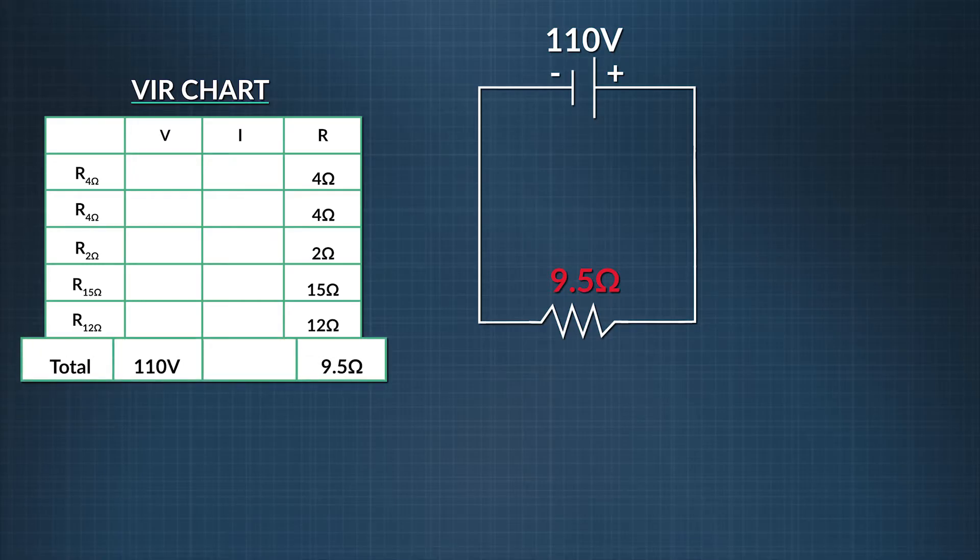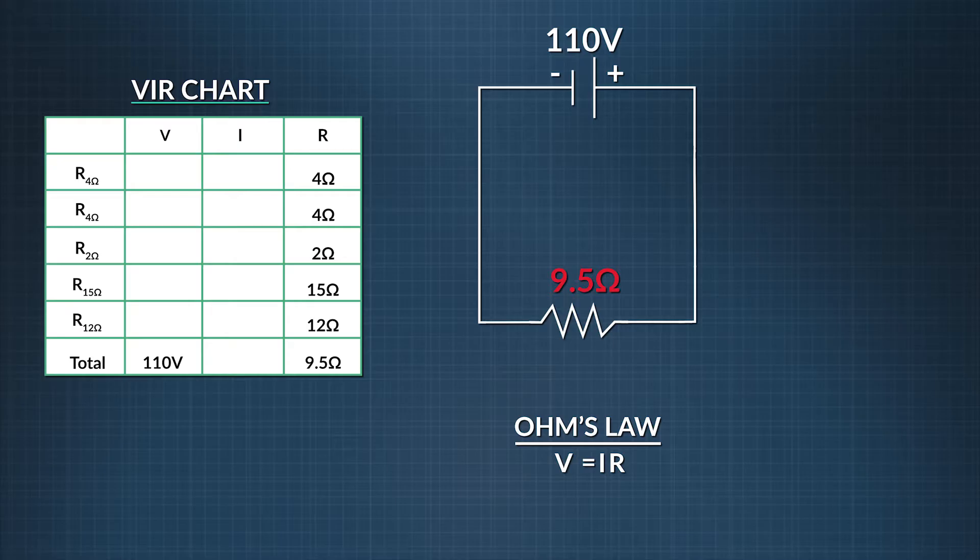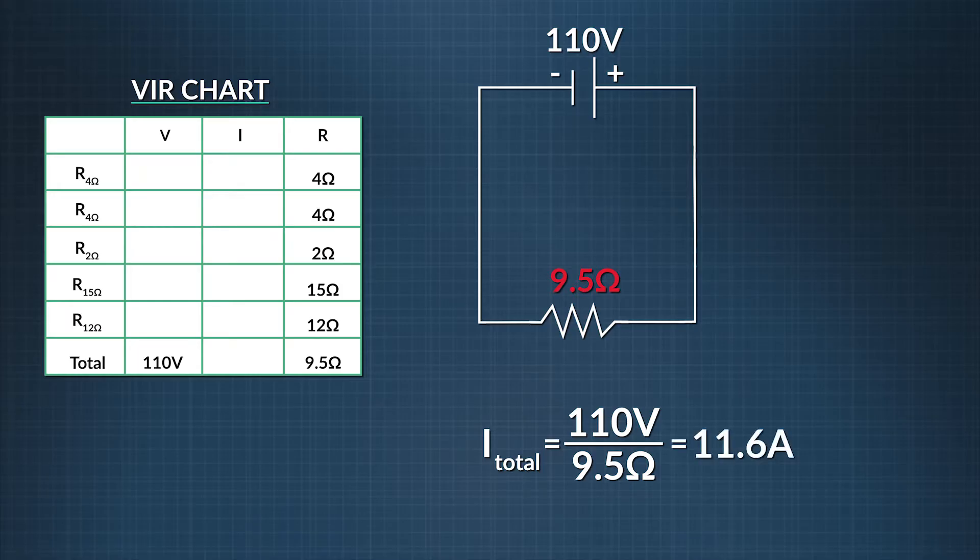Since we know two out of the three variables, we can use Ohm's Law to solve for the total current in the circuit. We can rearrange Ohm's Law to solve for current. Current is equal to voltage divided by resistance. When we plug those values in, we find the total circuit current is 11.6 amps. Now let's go back to our VIR chart and fill in what we found, which is total current.